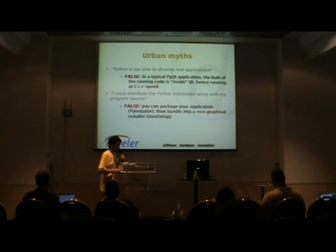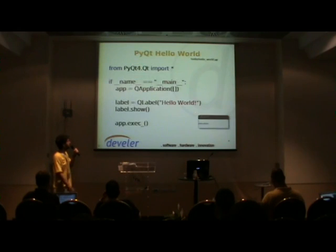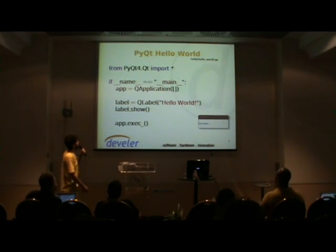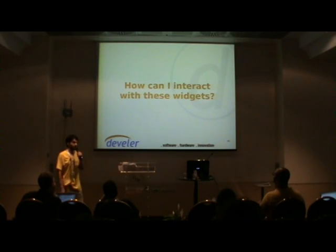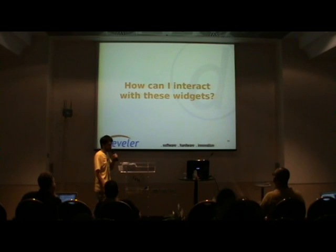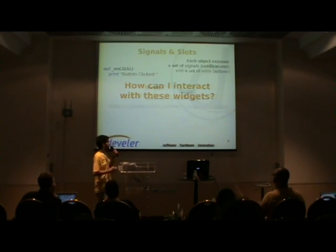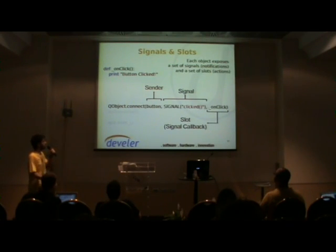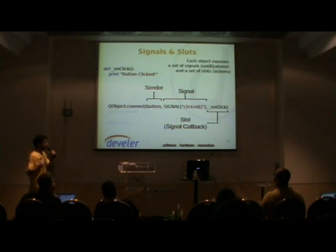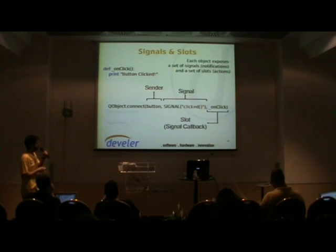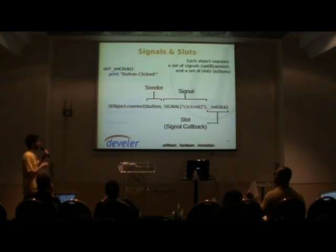So what are we going to see tomorrow in our training? We will show you the obligatory Hello World. We will show you how widgets in your graphical user interface can interact with each other using the nice Qt feature of the signal-slot system. Each object exposes a set of signals that compose basically its API, and a set of slots that are the actions that can be performed on that widget. Using this signal-slot system, you can connect an action to be performed — a slot — when the object emits the signal.